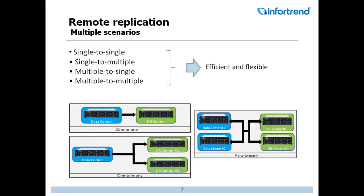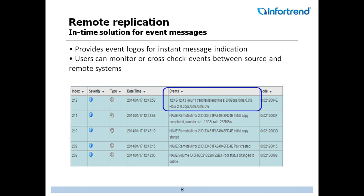Remote Replication's Multiple System Scenarios: shown below are some of the possible scenarios. It can be a single system to a single system, a single system to multiple systems and vice versa, or multiple systems to multiple systems. The system also provides instant event logs and messages, and users can monitor or cross-check events between source and remote systems.